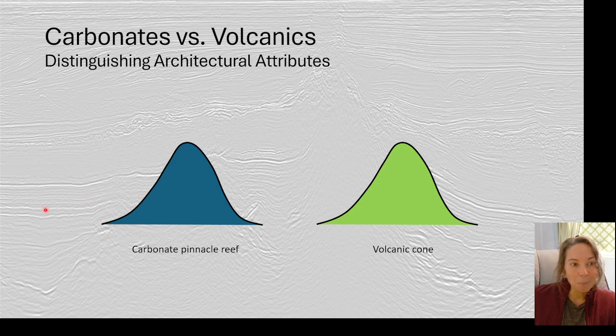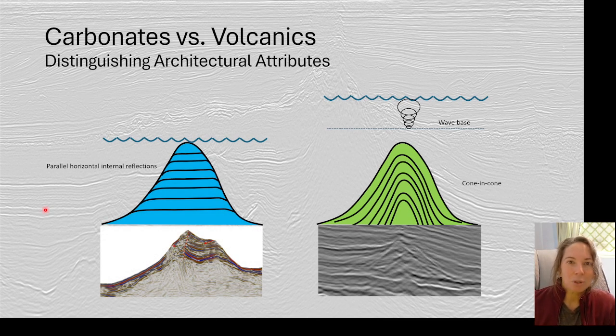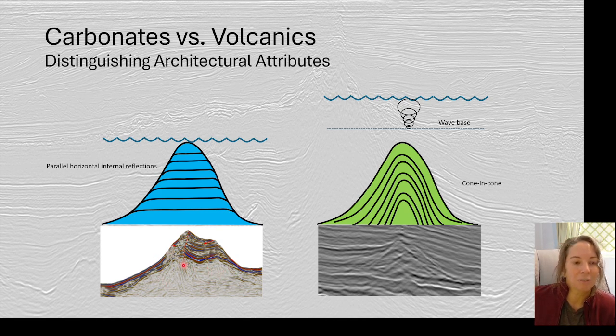Carbonates versus volcanics. We've seen a couple examples of these. They can be kind of confused for each other, particularly if you're working in a frontier basin or an area that you're not familiar with. I've shown you a few cases where we actually have carbonates and volcanics, the carbonates building on volcanoes, and we have them both in the same area. One of the things you want to keep in mind is that sometimes you're actually able to see the internal structure between these two cases. Here's a case of a carbonate, and I pointed out in previous lectures, where you can actually see the internal architecture of the carbonate if your seismic is good quality enough. The volcanics tend to build cone on cone. Sometimes you can actually get a little bit of hint of that also, if you're lucky.